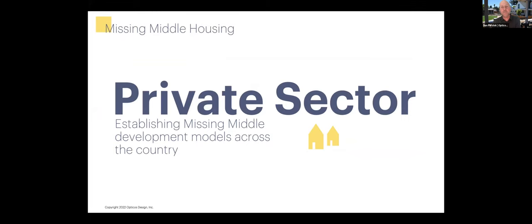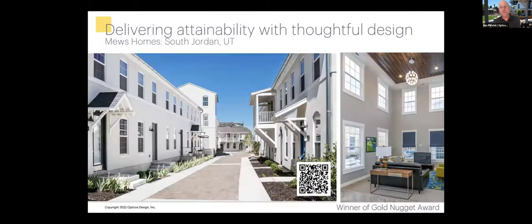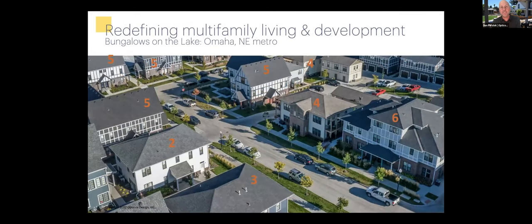Just a couple of high-level highlights of development applications of missing middle. Two of the biggest barriers right now are building code — which triggers commercial building code requirements at three units — and construction defect liability. We've been able to work with developers to deliver attainability. This is a great project called the Muse Homes, where we were able to work with a local builder to deliver housing at price points about $25,000 less per unit than their typical tuck-under townhouse, working with this developer in the Omaha, Nebraska metro to deliver a complete neighborhood of missing middle typologies.